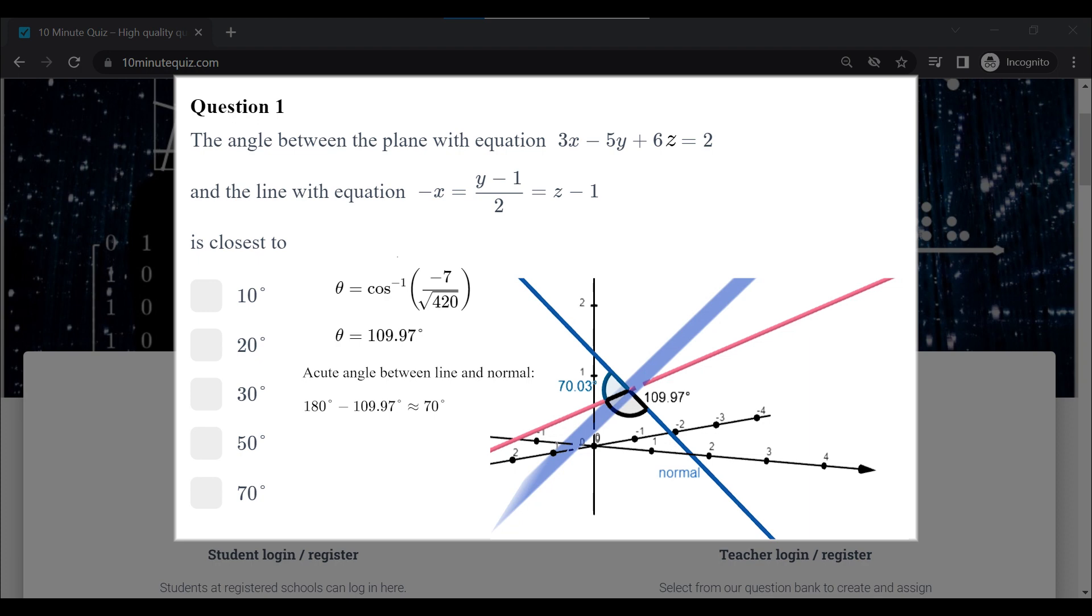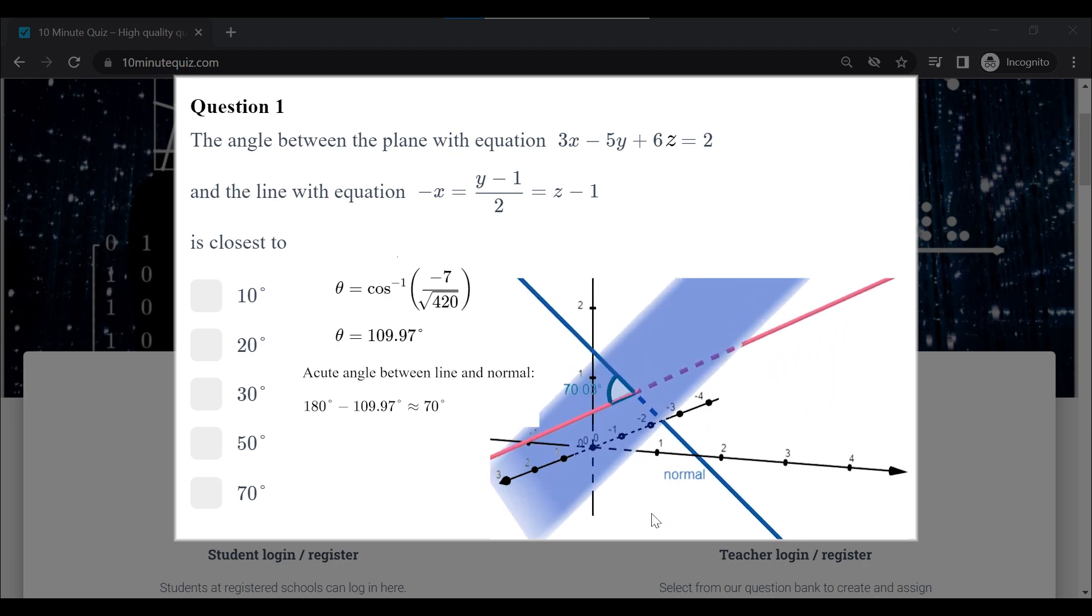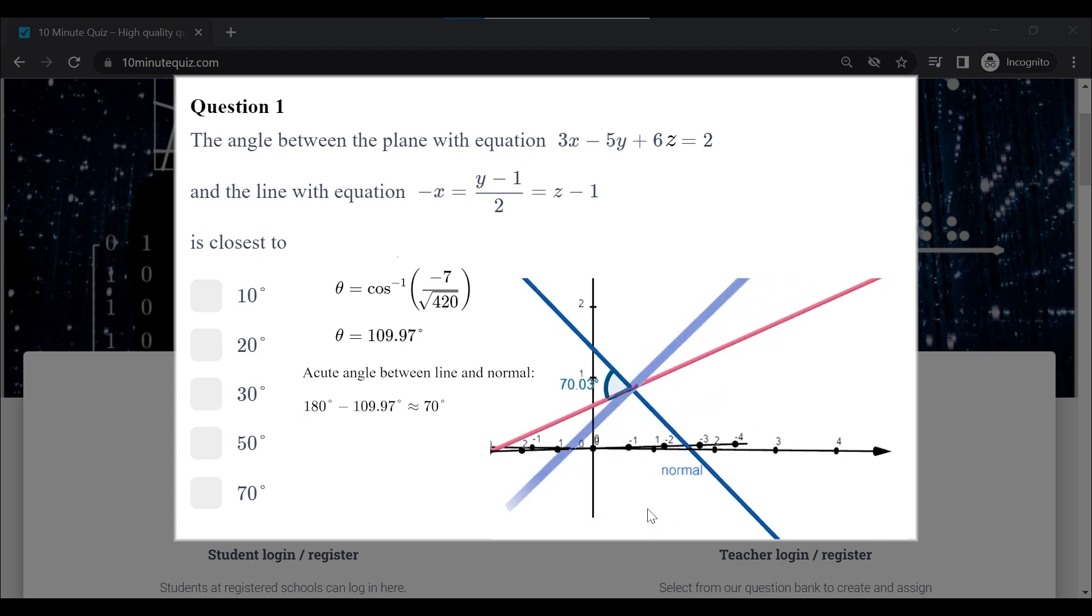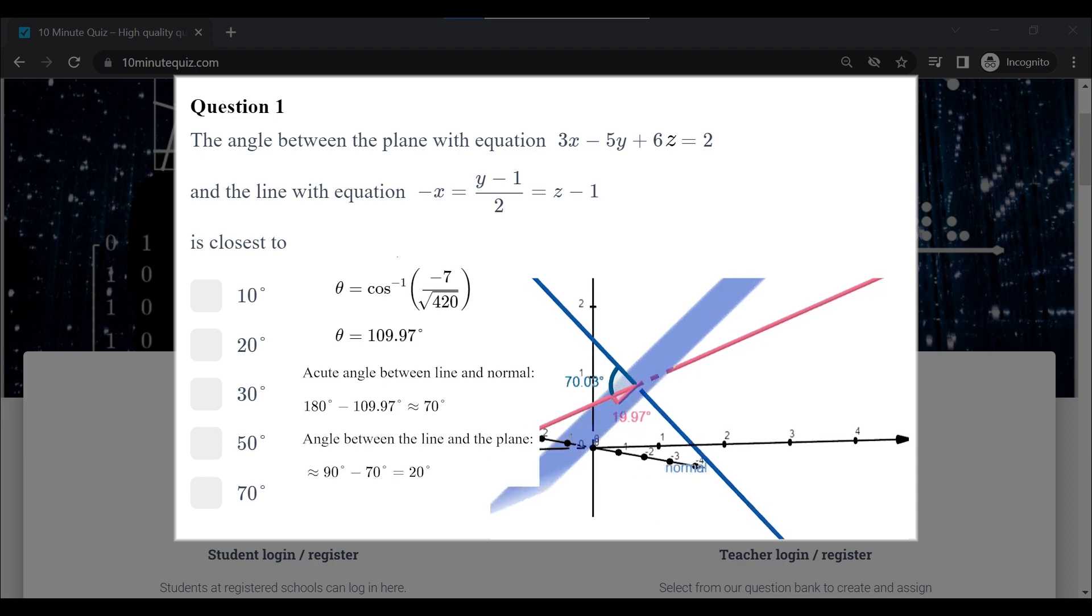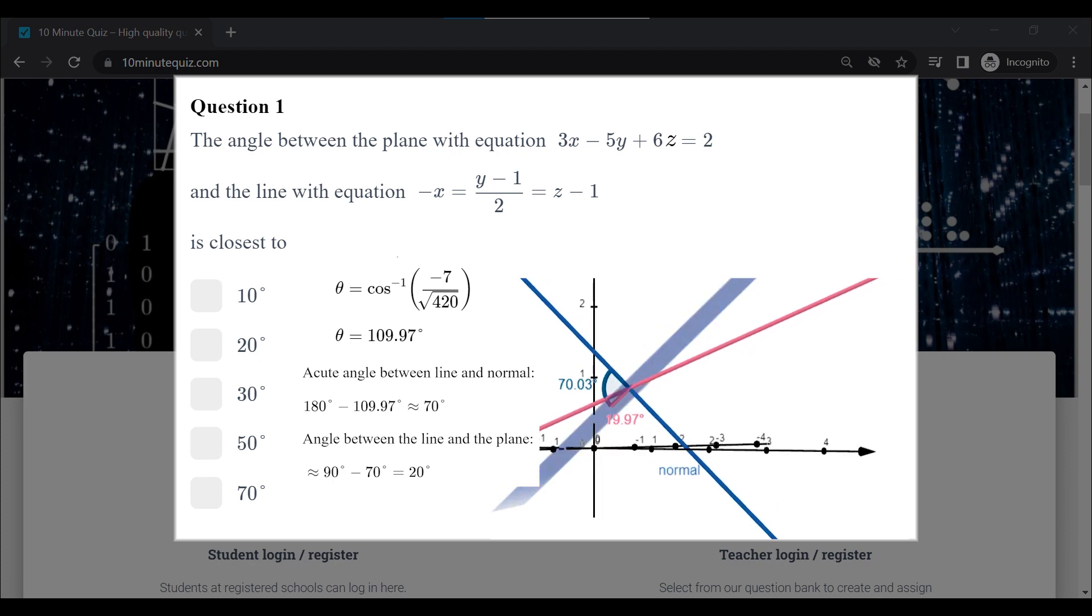So 70 degrees between our line and our normal. Then finally, remember what we really want is the angle between the line and the plane. We take our 70 degrees and subtract it from 90, because the normal vector is perpendicular to the plane. So 90 minus 70 will give us 20 degrees between our line and the plane.